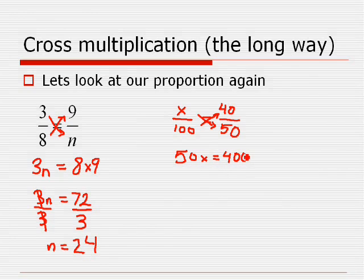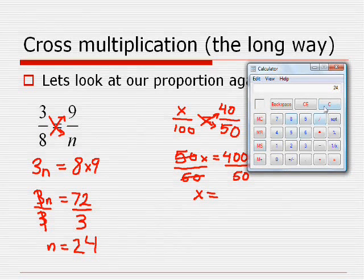I want to get rid of my 50, so I do the same thing on both sides. I'm going to divide by 50. These 50's cancel out. I'm left with x is equal to 4,000 divided by 50, which, if I use my calculator, 4,000 divided by 50 equals 80. So my answer is going to be x equals 80.